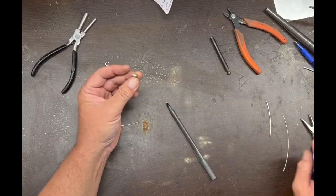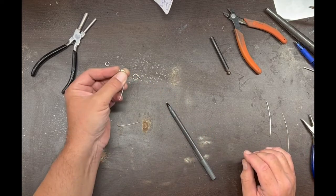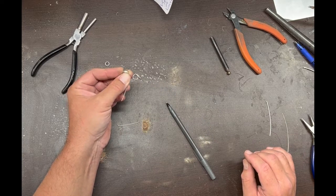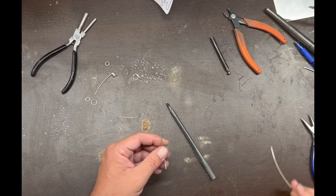Most of the jump ring making systems use a saw, and you put a spring like I'm making here into a little vise and then use the saw to cut through it. But I find this to be pretty quick and efficient, and those systems tend to cost about $200.